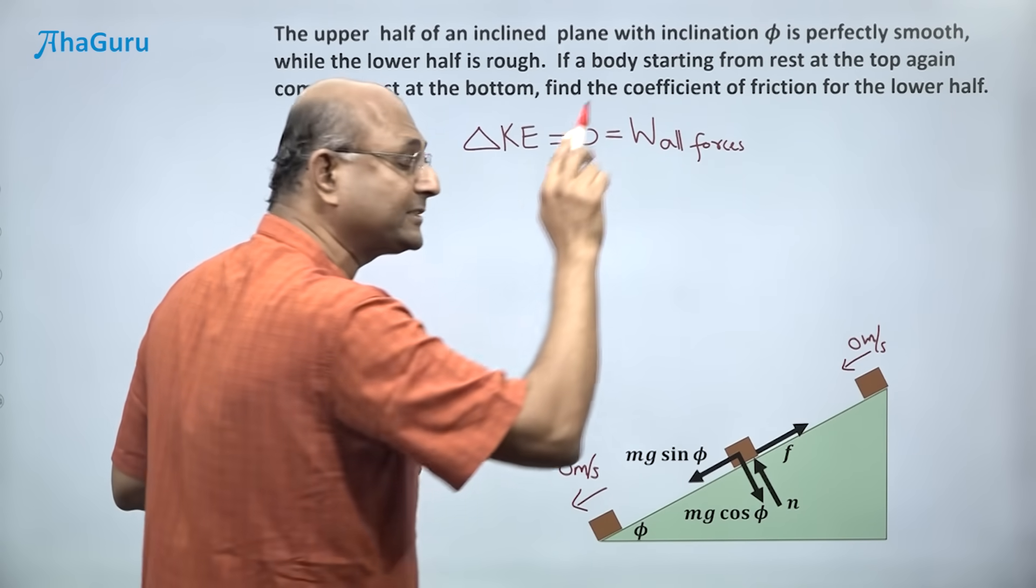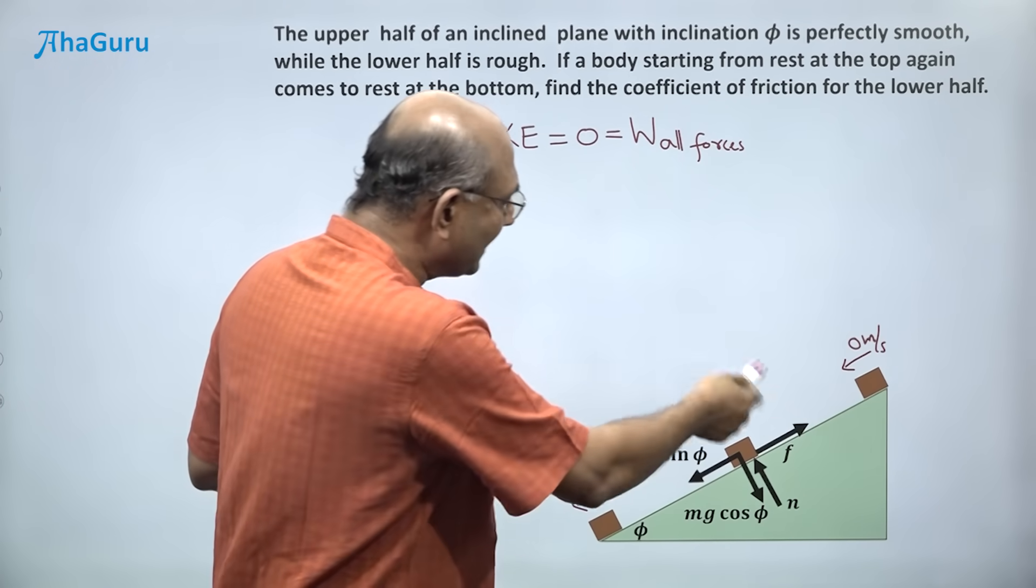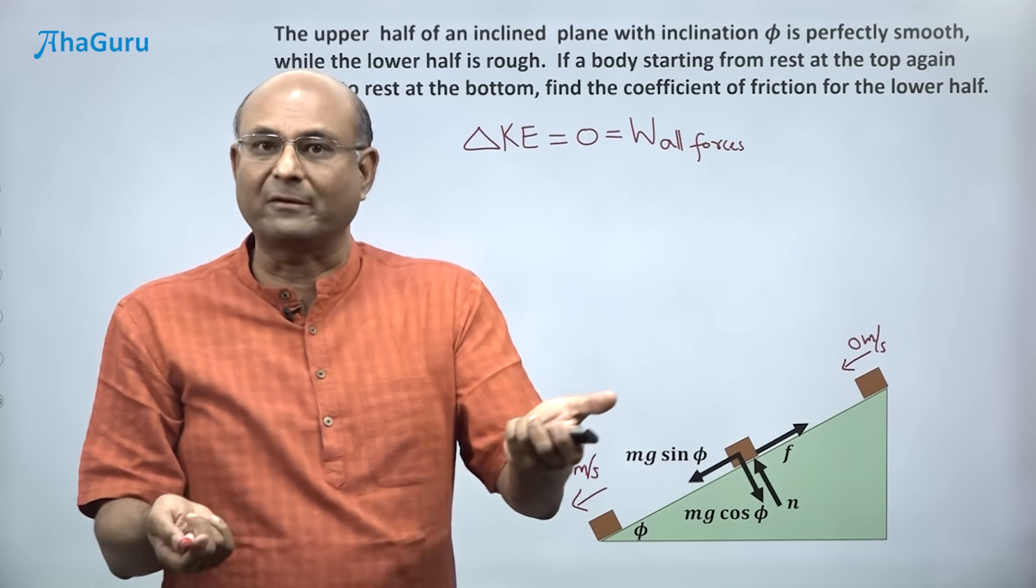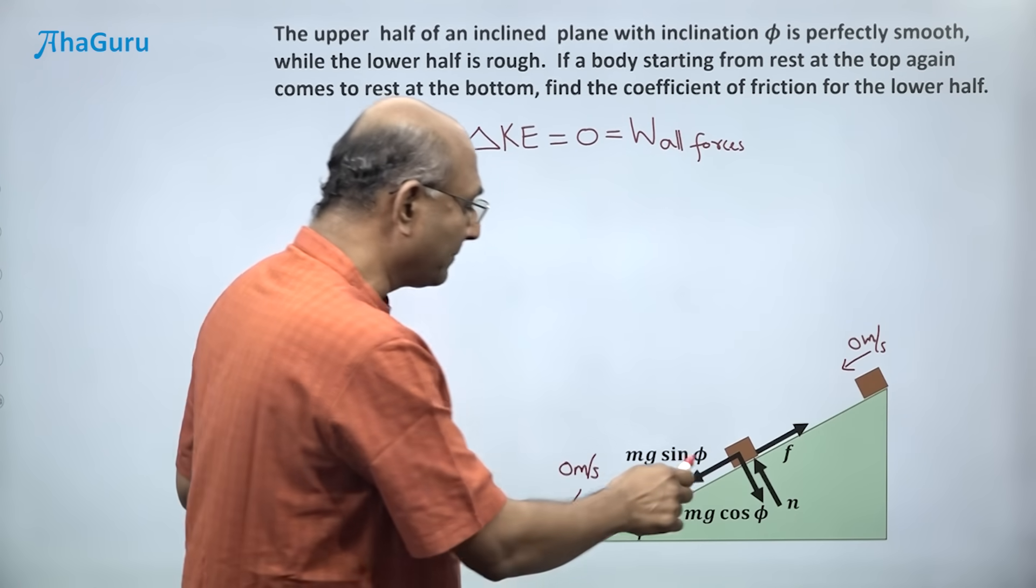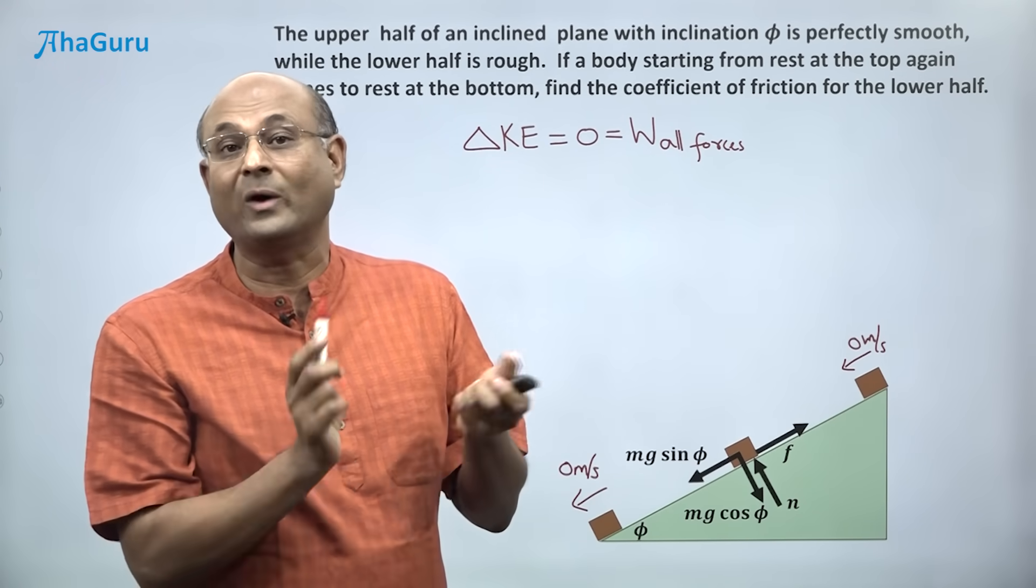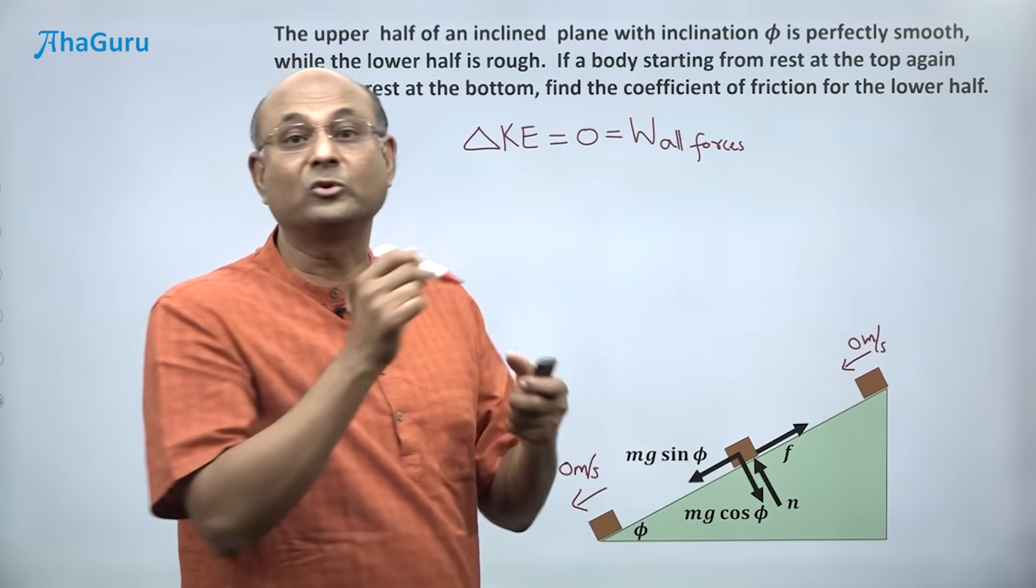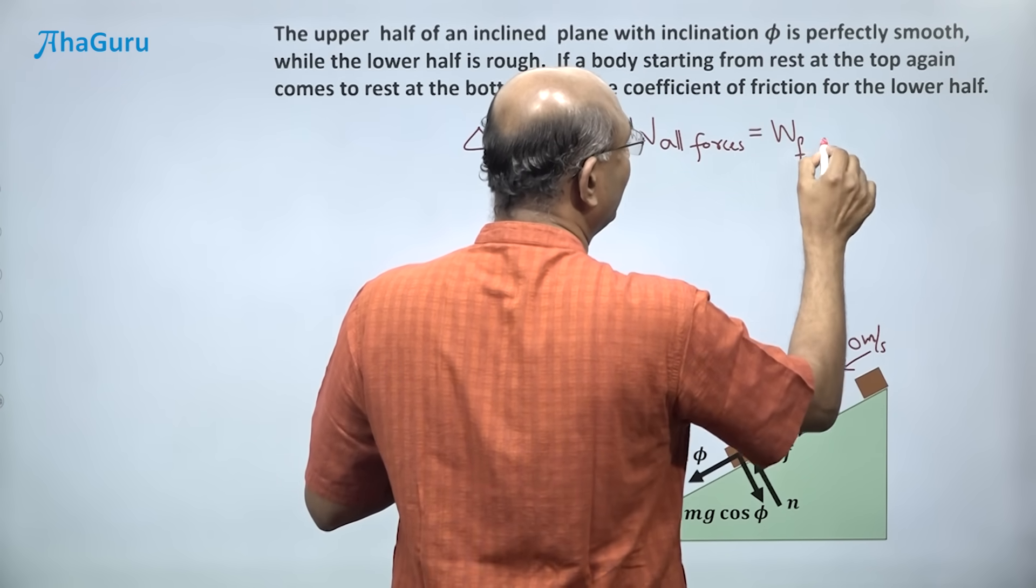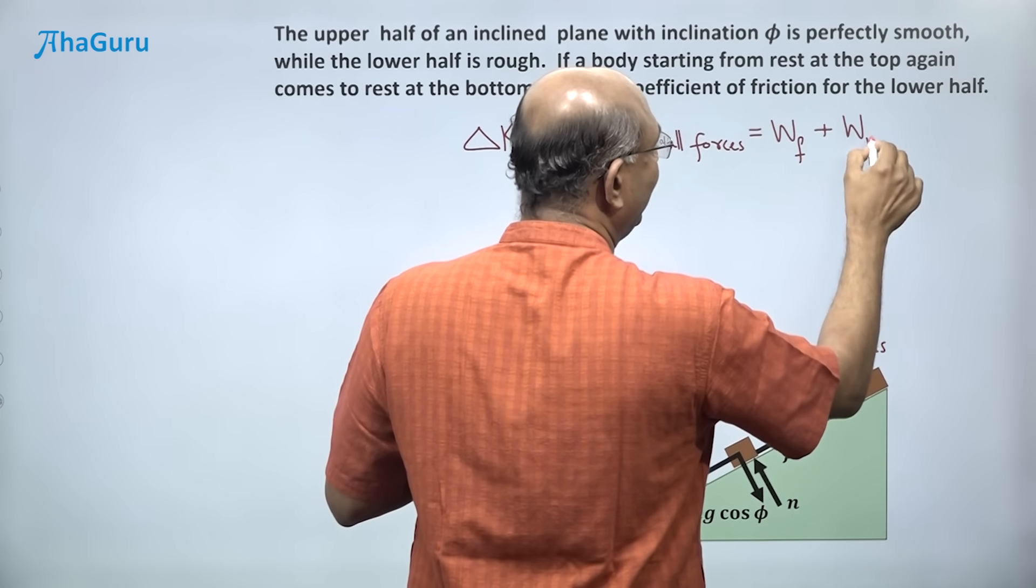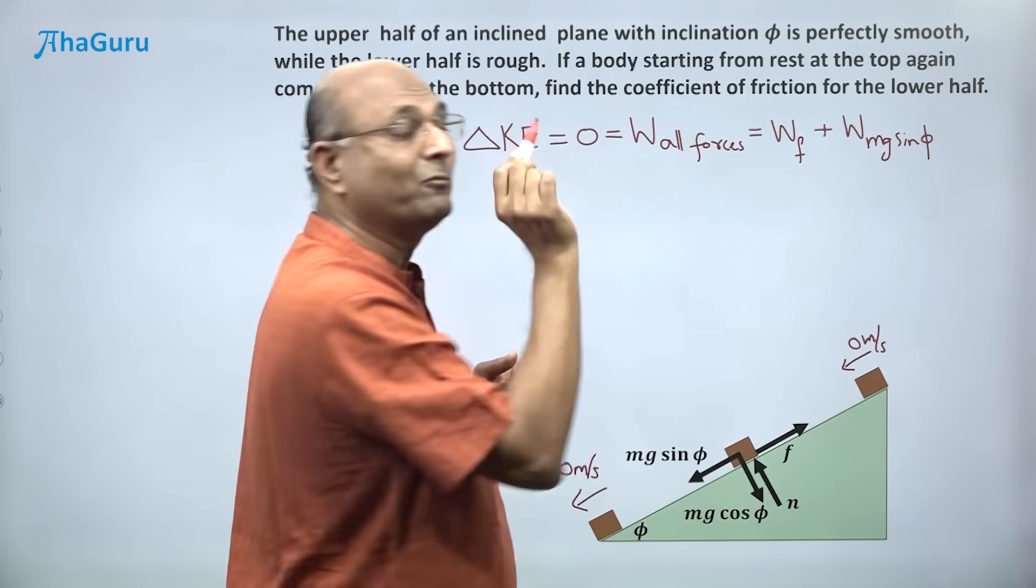So the work done by all four forces is basically what we want. But the work done by normal force is zero. Work done by mg cos phi is zero. Why? Because the force is perpendicular to the motion direction. So we really want to know what is the work done by friction plus what is the work done by mg sin phi.